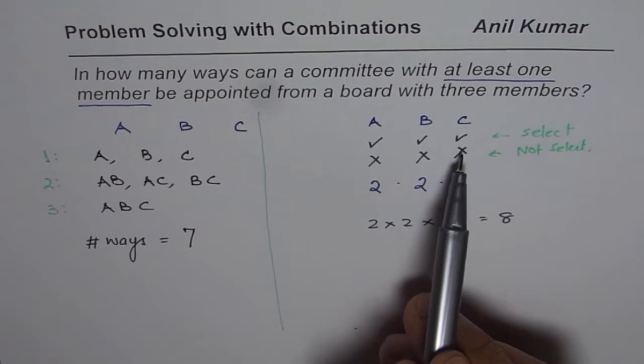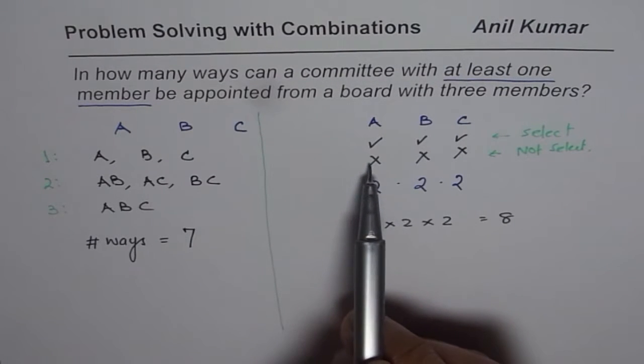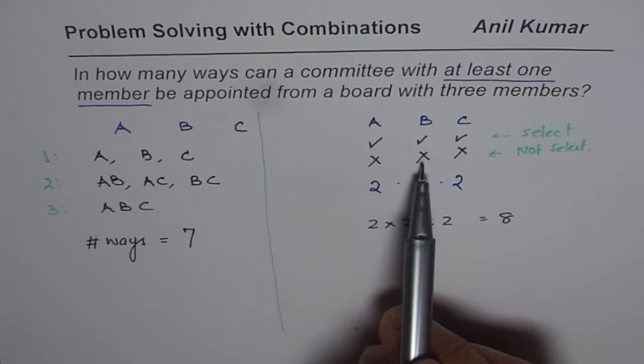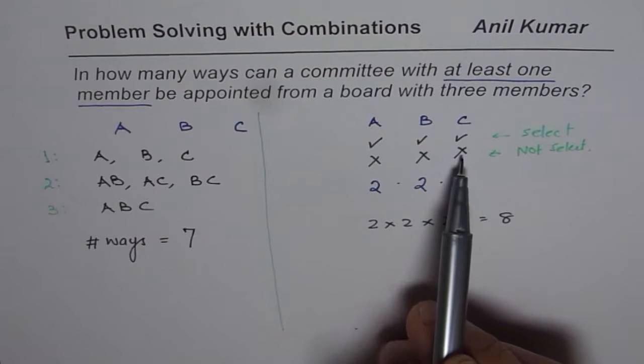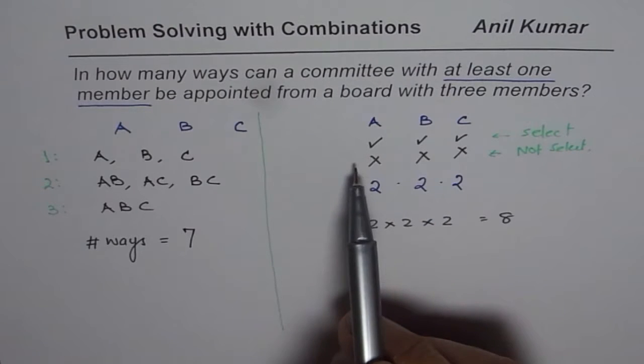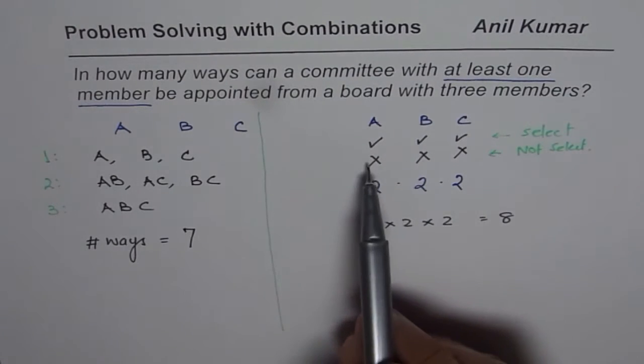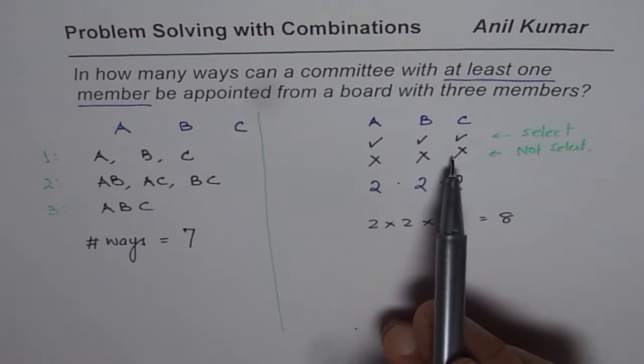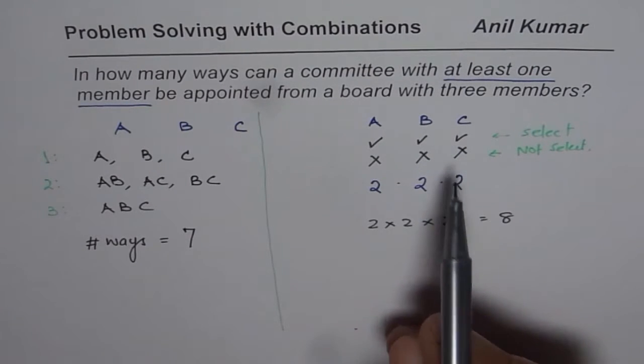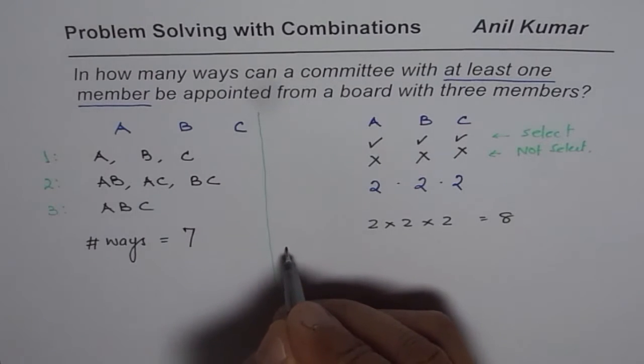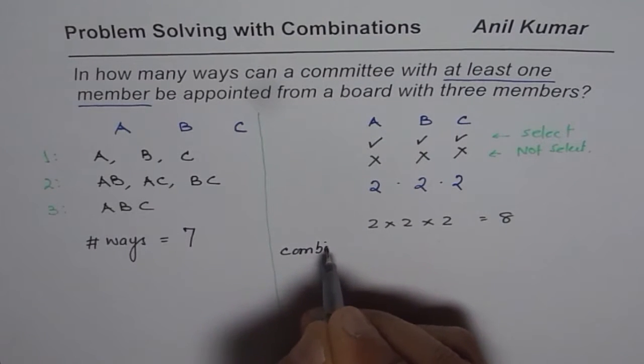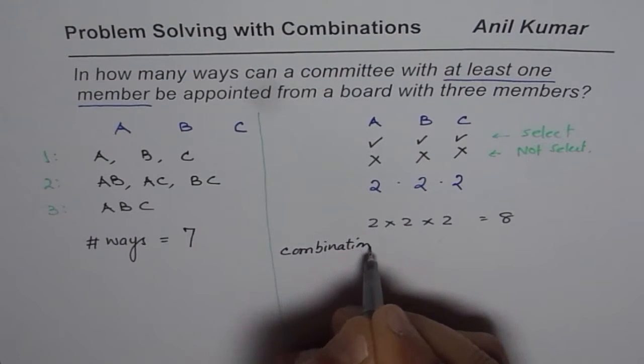Now, here you find one option that if you do not select A, and if you do not select B, and you do not select C, then that means there is one option where you are not selecting any member. So you have to take away that particular set. So there is a combination where none is selected.